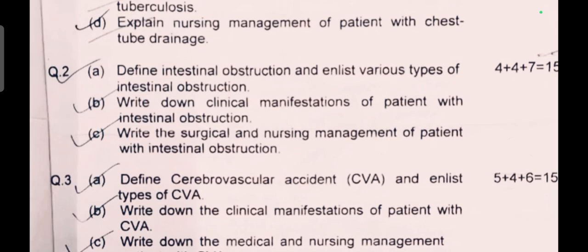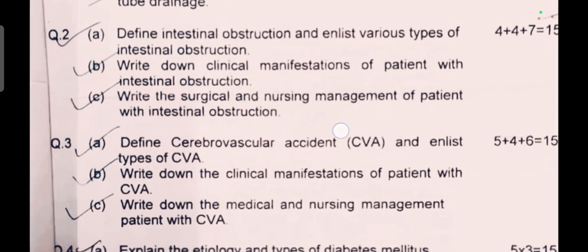Question number two: (a) Define intestinal obstruction and enlist the various types of intestinal obstructions — 4 marks. (b) Write down clinical manifestations of patient with intestinal obstruction — 4 marks. (c) Write the surgical and nursing management of patient with intestinal obstruction — 7 marks. Total 15 marks.